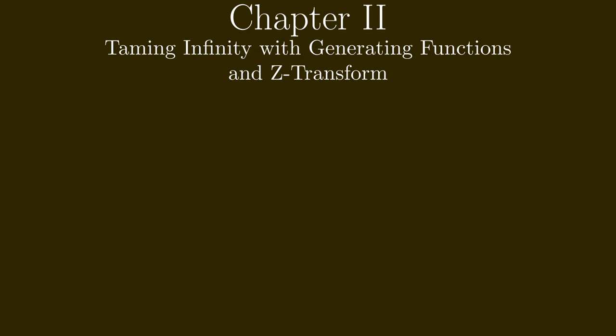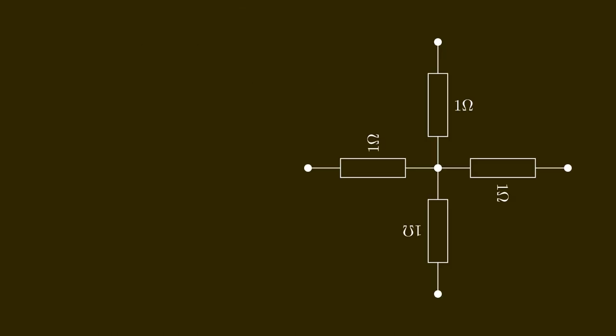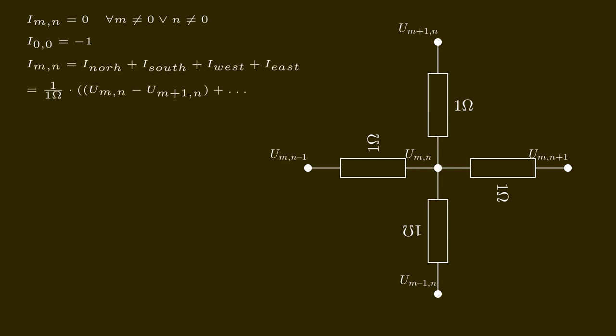In order to solve the puzzle around our infinite grid of 1 ohm resistors, we need some more tools. So let's look at our original problem. This is the middle of our infinite grid of 1 ohm resistors. In the middle we have the voltage U00, but the equations are the same around any point Mn, except that only in the middle we will inject a current. The injected current is mostly 0 except for the middle. It is always the sum of the current that goes north plus south plus west plus east. North is where we increase M, and east is where we increase N.